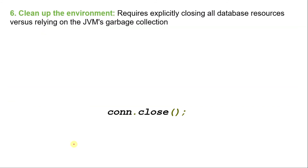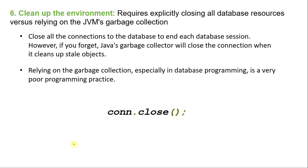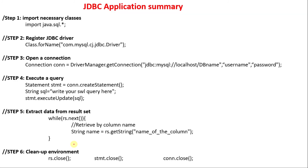Once your communication with the database is done, you can close all the connections and clean up the environment. If you don't close all the connections, the JVM's garbage collector will take care of it, but relying on garbage collection in database programming is a very poor programming practice. To ensure a connection is closed, provide a finally block in your code — keep the cleanup code inside the finally block, which will execute irrespective of whether an exception is thrown or not. Explicitly closing the connection conserves DBMS resources.